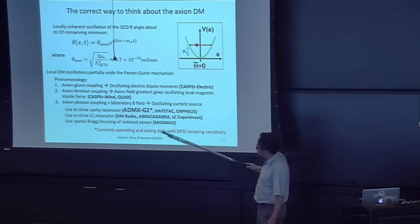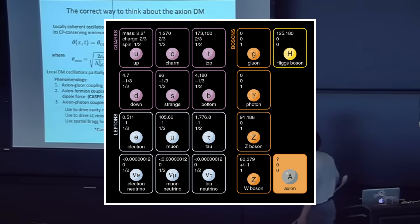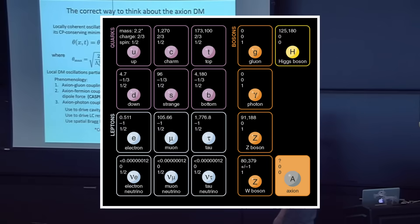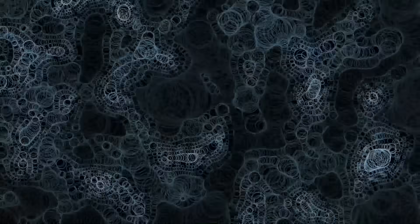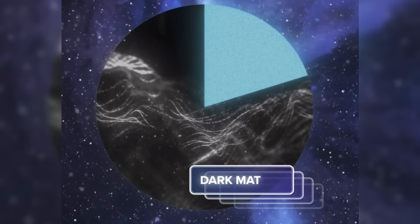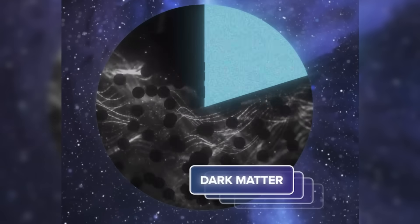To fix this, physicists hypothesized the existence of a new, ultralight particle, the axion. But axions aren't just a theoretical fix for a mathematical issue. Many scientists believe they could be the key ingredient of dark matter, the invisible substance that makes up around 85% of the universe's mass.